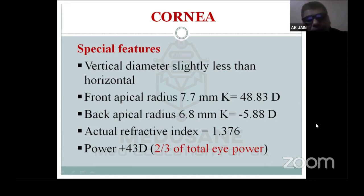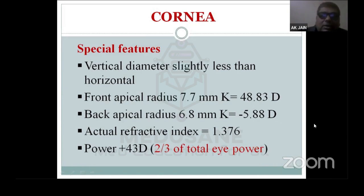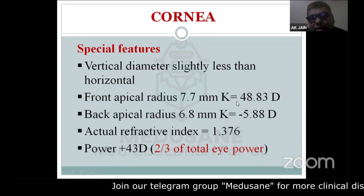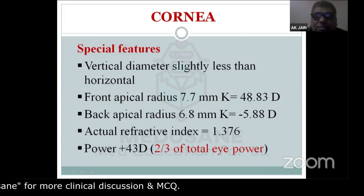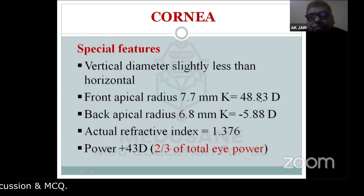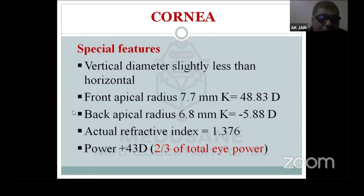The back apical radius of the cornea is 6.8 mm, with a curvature value of minus 5.8 diopters. So the overall difference between the front and back apical radii is roughly 53–54 diopters. The refractive index of the cornea is 1.376, homogeneous throughout. The refractive power of the cornea is around 40–43 diopters, which is two-thirds of the total eye refractive power.